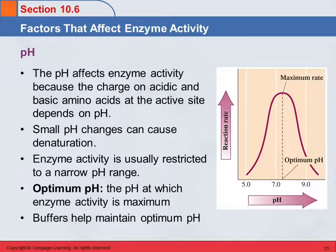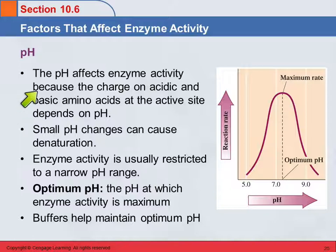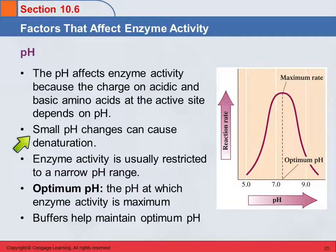Another thing that affects enzyme activity is pH, the hydrogen ion concentration. This should make sense because those amino acids have acidic and basic side chains. When we change the pH, we change which of them are protonated and deprotonated. We talked about zwitterions and how the acidic and basic amino acids have four different forms instead of three like the neutral ones. Small pH changes can cause denaturation of the enzyme, and that's going to affect the enzyme activity.